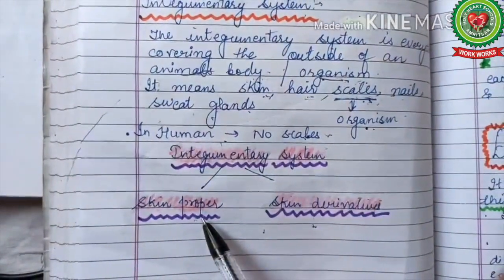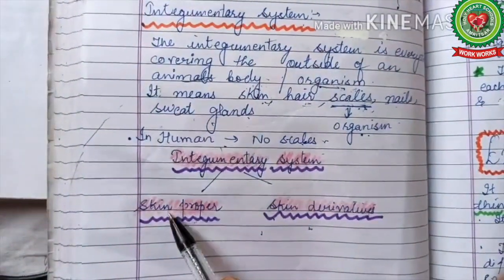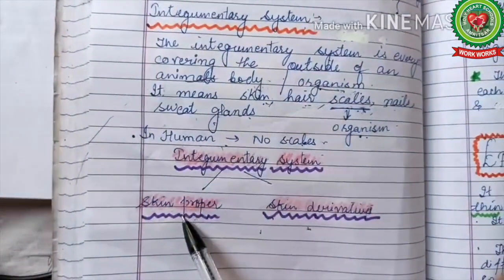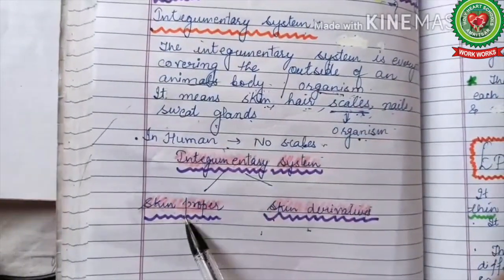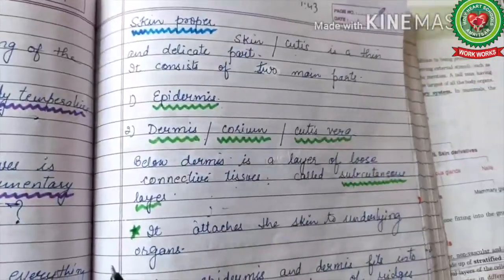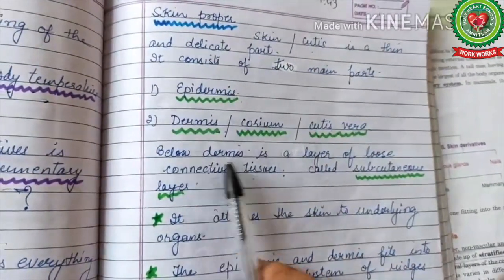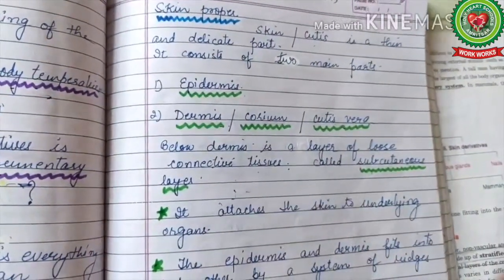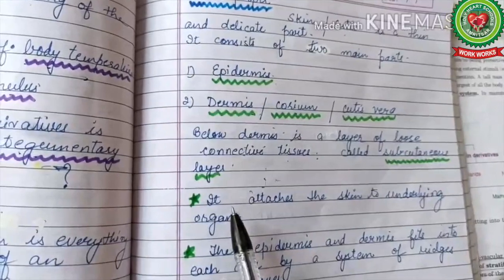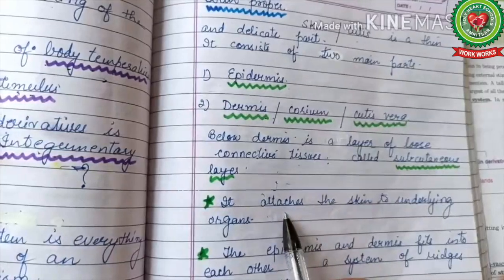The integumentary system consists of two parts: skin proper and skin derivatives. Skin proper is further divided into epidermis and dermis. Another name for dermis is corium or cutis vera. Below the dermis is a layer of loose connective tissue called the subcutaneous layer or subcutaneous tissue, whose function is to attach the skin to underlying organs.